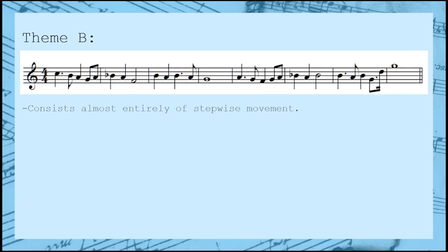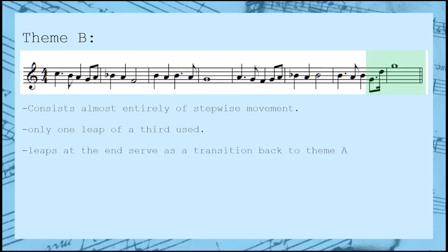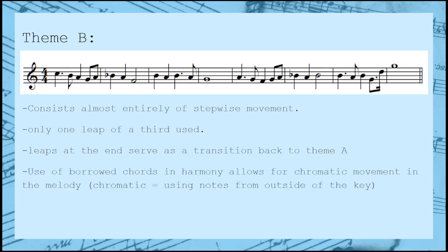Theme B is a completely different story. It moves almost entirely by step, with only a single leap of a third in the second measure. At the end, we do have a more heroic series of leaps, but this serves more as a transition back to theme A than as an actual motif from theme B. The interesting harmonic choices also allowed for chromaticism in the melody — I used both B flat, which comes from F major, and B natural, which is from F Lydian. This helps give a much more energetic and exotic sound to the melody.